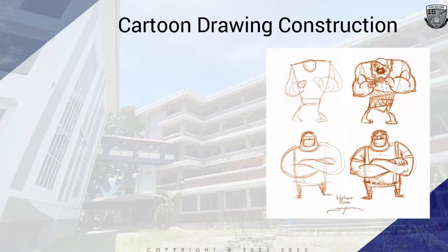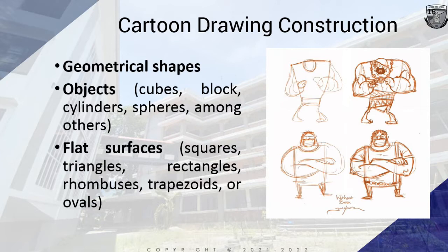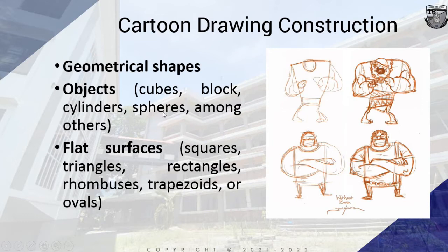Let's proceed on following the procedures in cartoon drawing construction. The process of learning how to draw is made easier when subjects are first drawn as assemblies of simple geometrical shapes, such as circles, rectangles, and others necessary to draw the outline of your character. Everything around can be described with geometrical shapes. Objects can come in the form of cubes, blocks, cylinders, spheres, and others that you can use in creating your cartoon drawing.